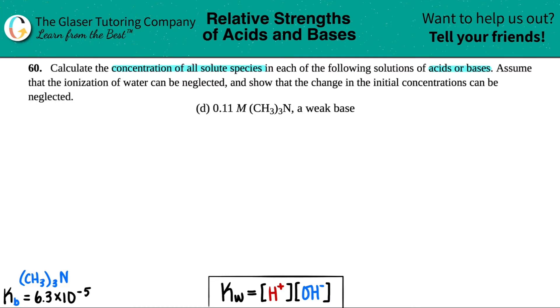Thank you for telling me it's a weak base. I went to the back of the textbook to find the Kb value of trimethylamine CH₃₃N, and it's 6.3 times 10 to the negative fifth. Now remember, any Kb value has to deal with the balanced equation, so first we have to write a balanced equation for this base. With all bases, you have to incorporate water.